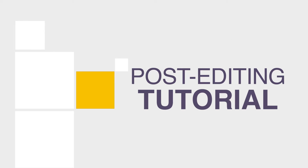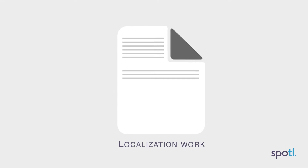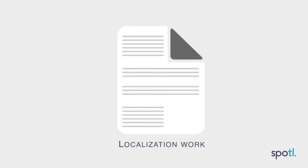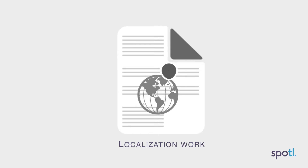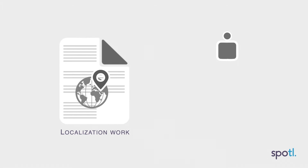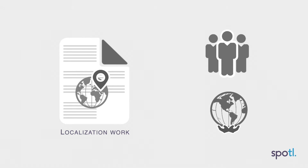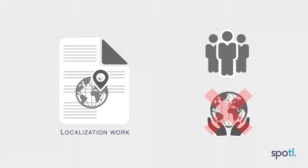Post-editing tutorial number 5: Localization. Localization is a common process in translation. It involves adapting the cultural references of the source text for the target audience, who otherwise would not have the elements necessary to understand.